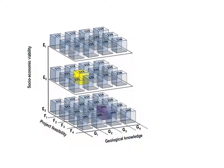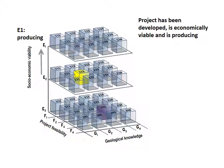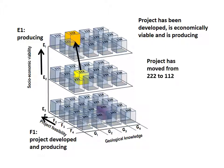When a project matures and starts producing, the socio-economic viability becomes category E1 on the E-axis. With a fully developed project, the F-category becomes F1. The project, moving up from category 2, 2, 2, can now be categorized as 1, 1, 2.